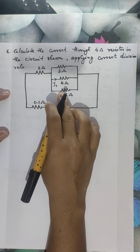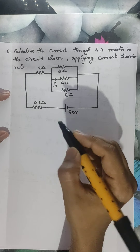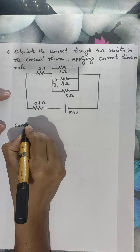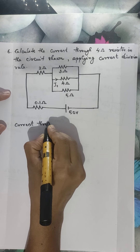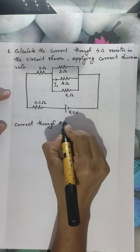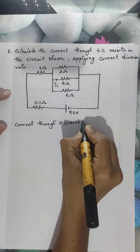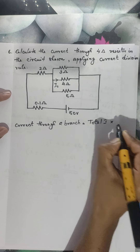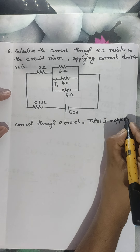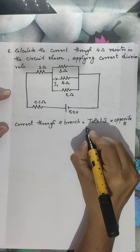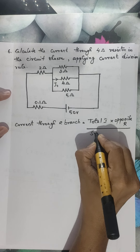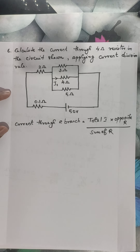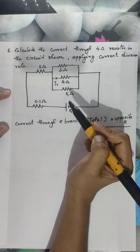In order to apply the current division rule, we know the equation: according to the current division rule, current through a branch equals total current multiplied by the opposite branch resistance, divided by the sum of resistances.